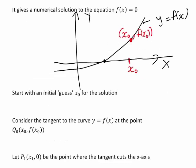Now consider the tangent to the curve y equals f of x at the point Q0 which has coordinates x0, f of x0. That is, imagine dropping a tangent from this point here. I have just drawn that tangent line on the diagram in blue.